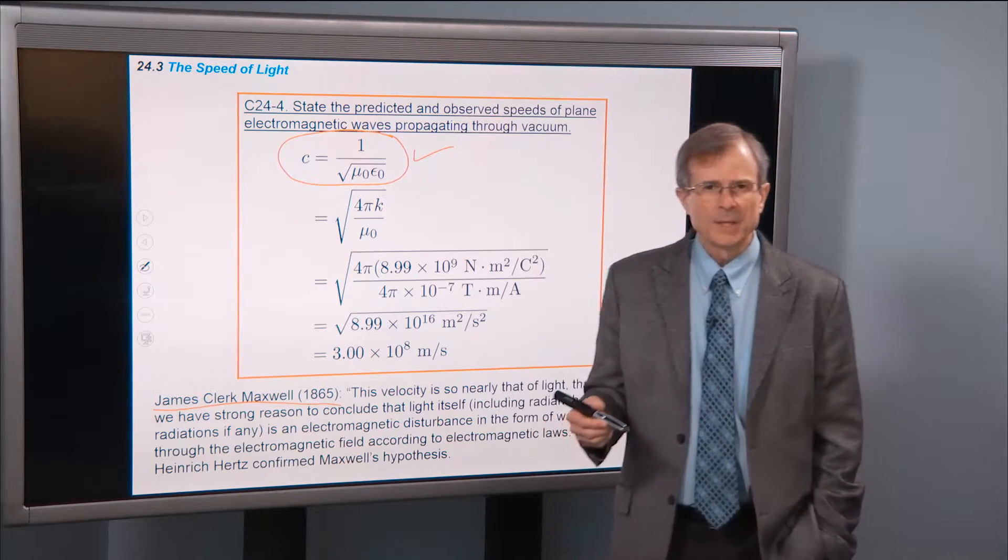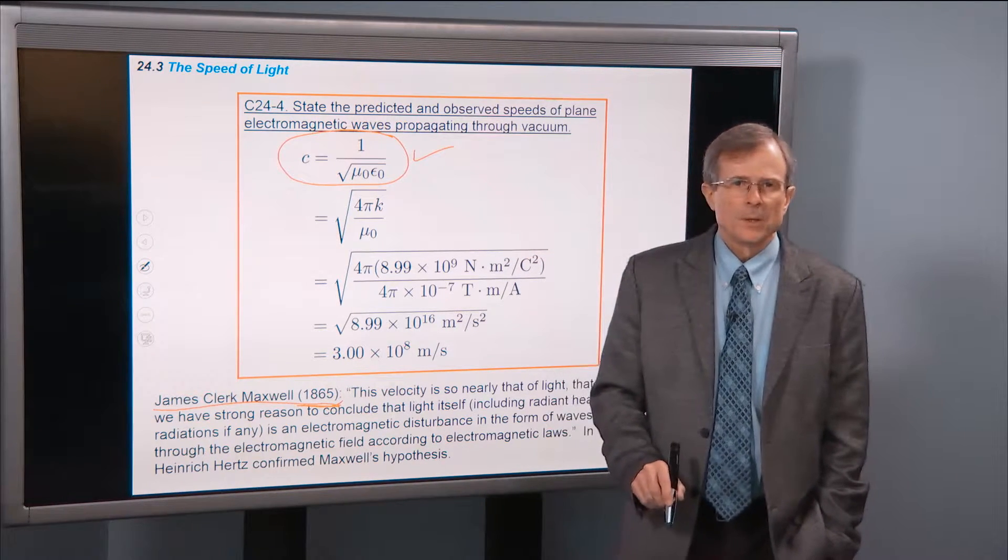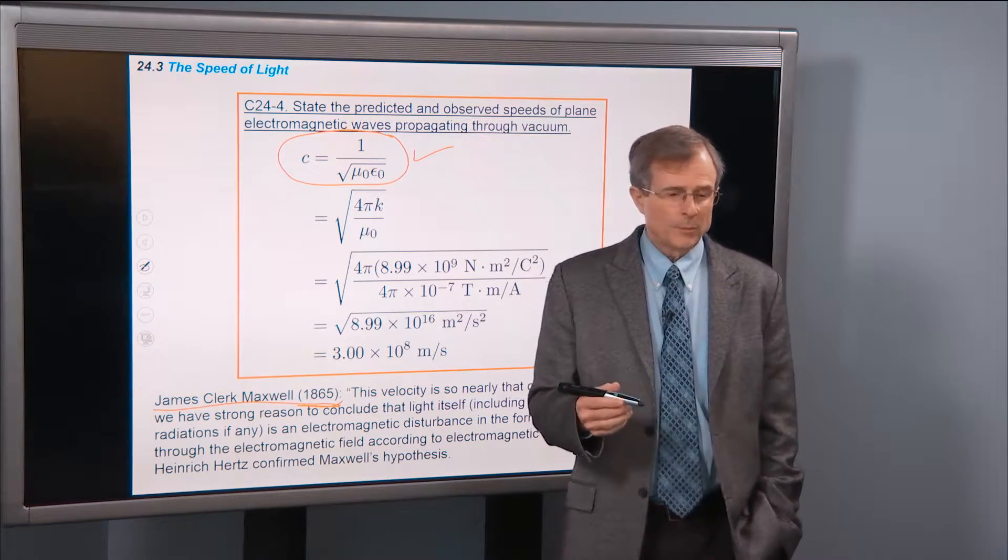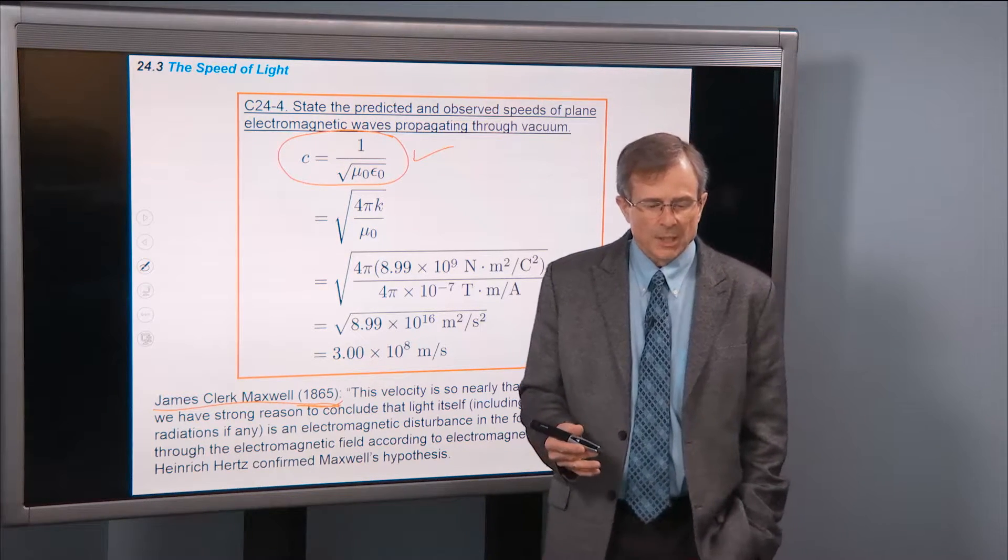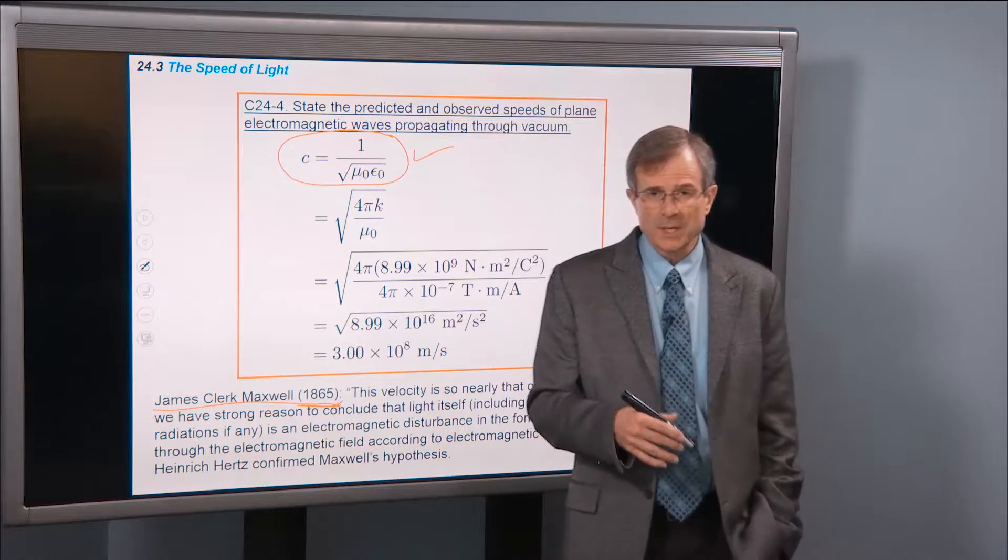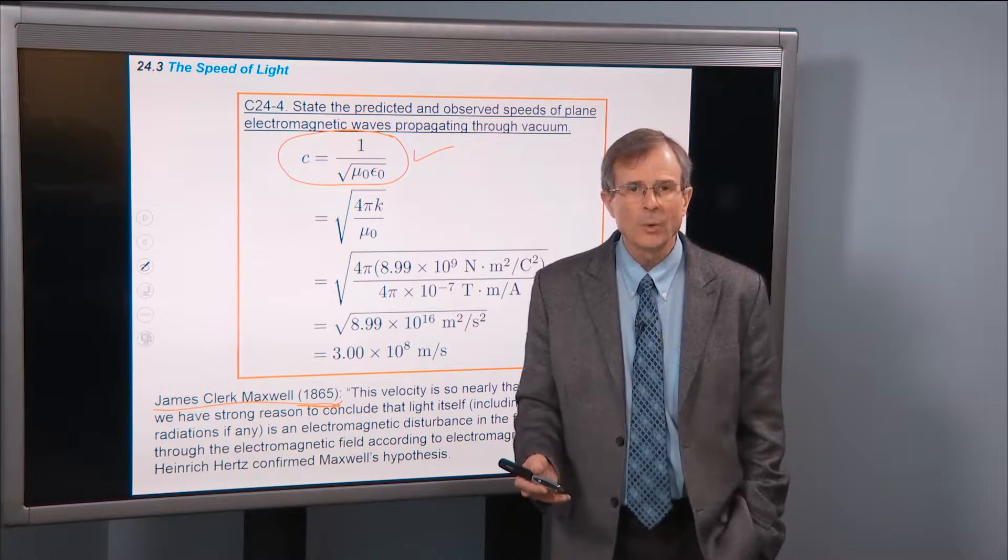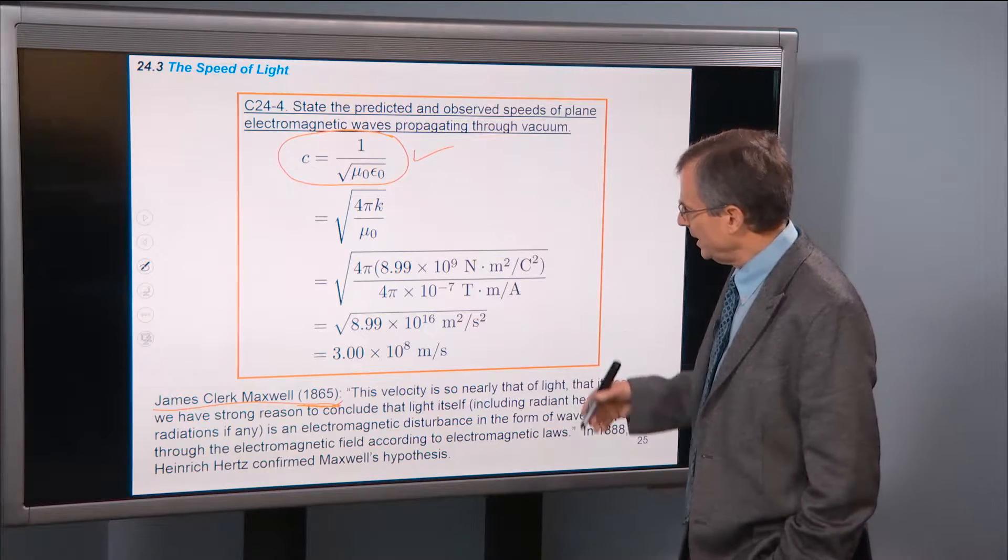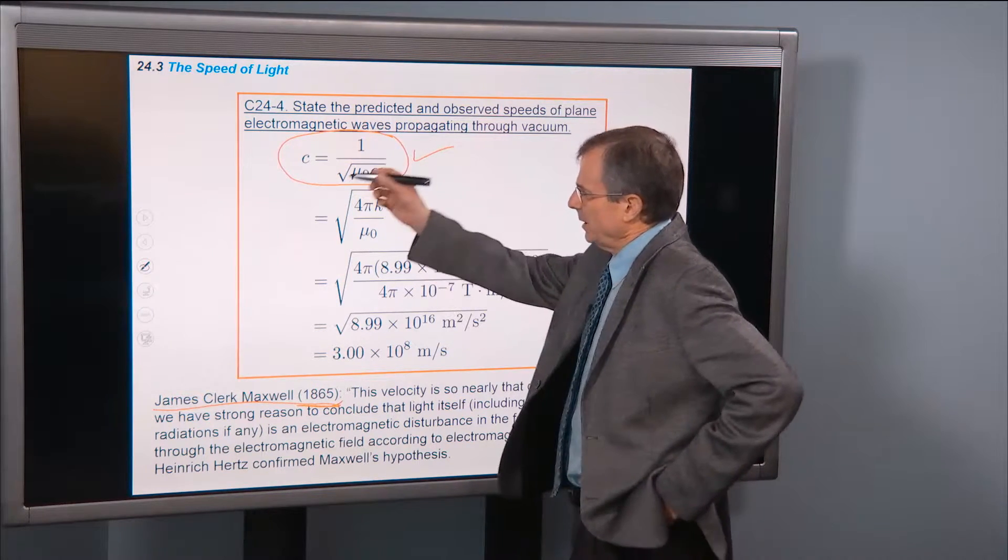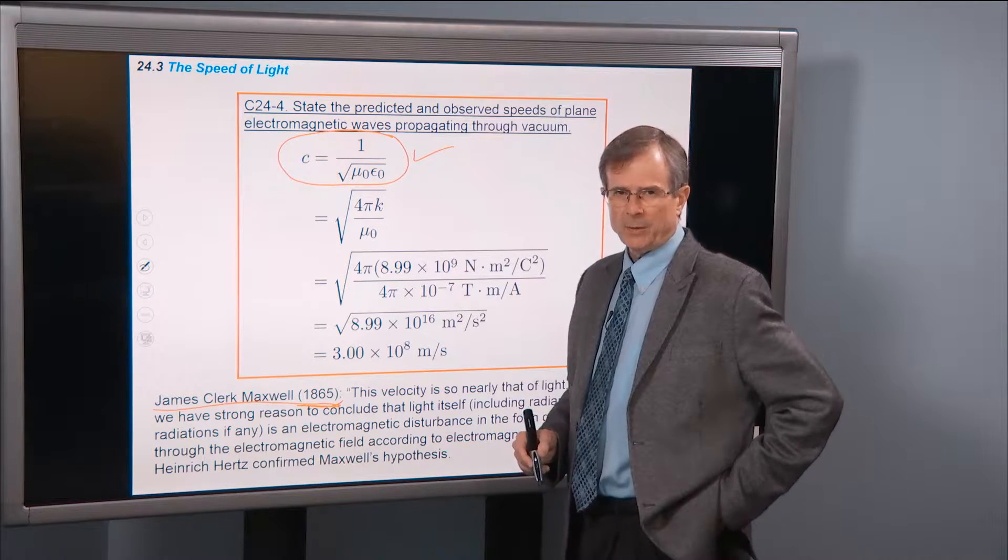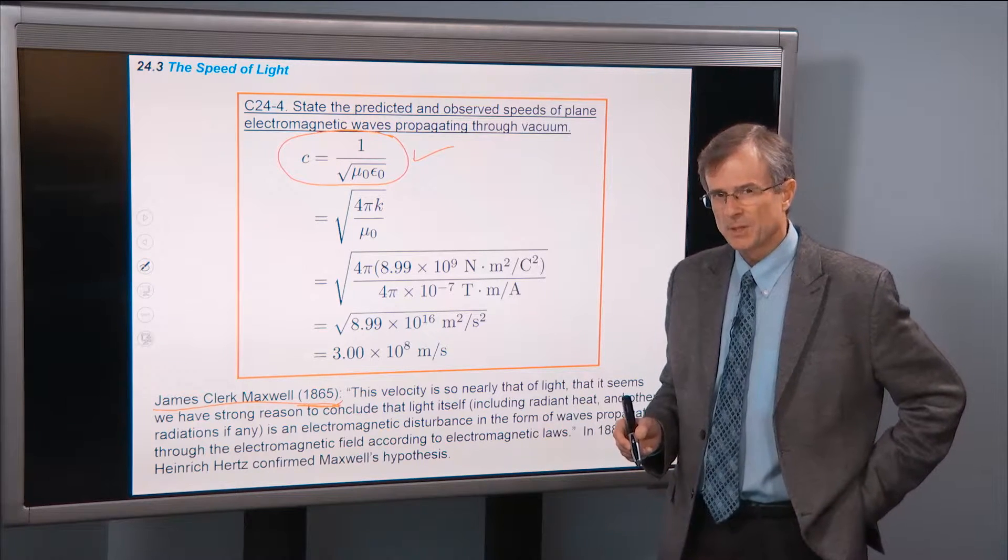At that time, Maxwell's calculations, since 1865, nobody—well, he didn't know what they were. He was just looking at electromagnetic radiation. We didn't know at the time that light and radio waves, et cetera, were electromagnetic radiation. We didn't know what light was. And so he did these calculations. He came up with this relationship for the speed of electromagnetic radiation, as 1 over the square root of mu-naught times epsilon-naught.